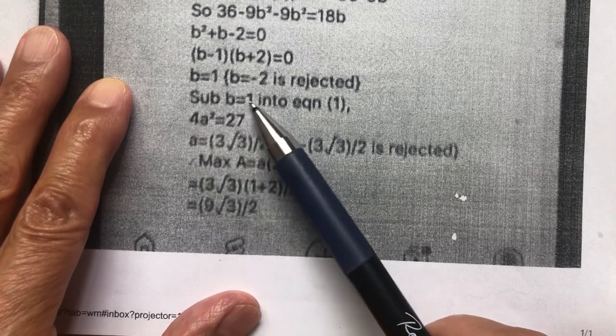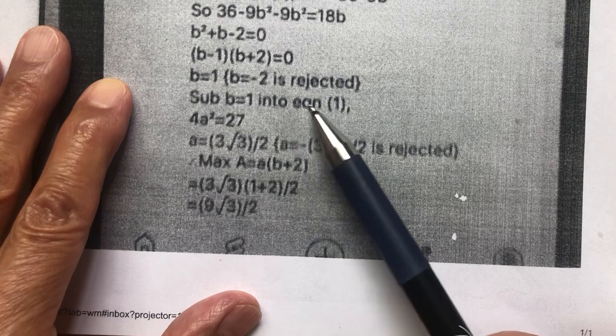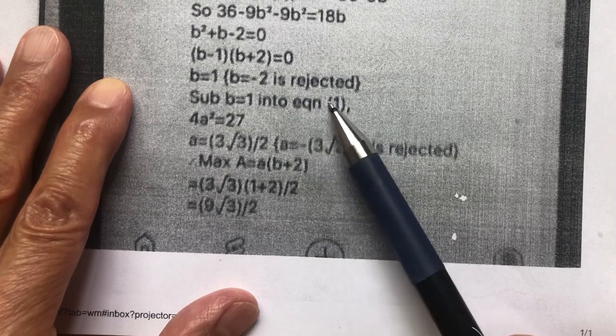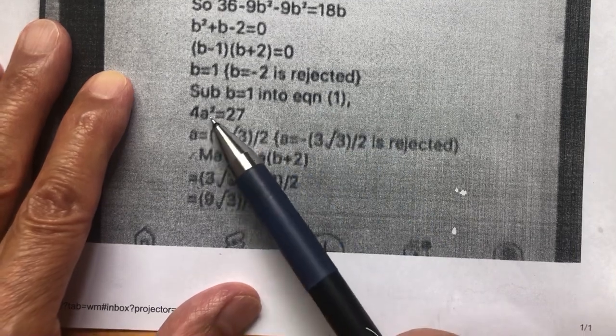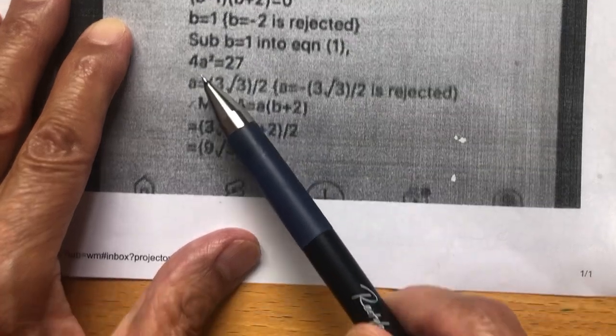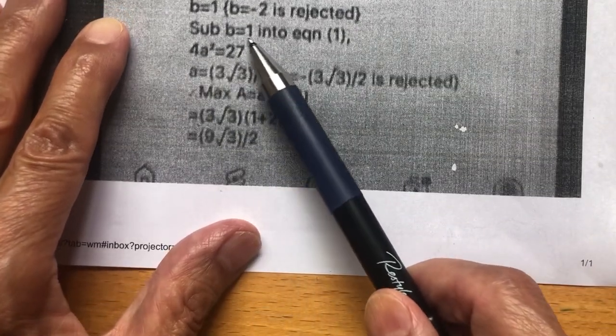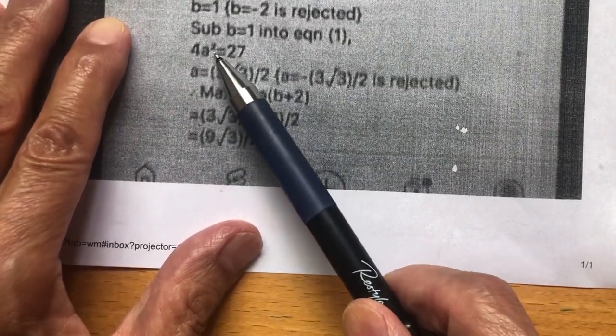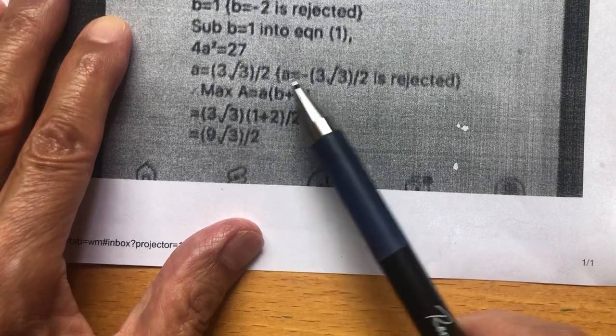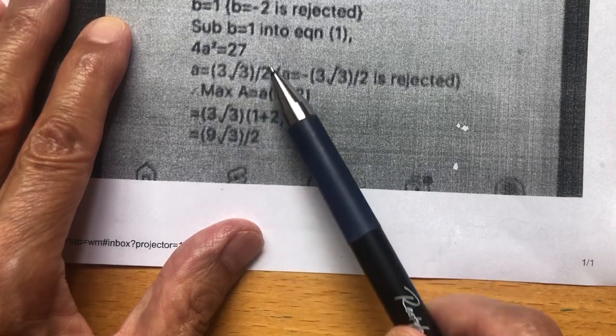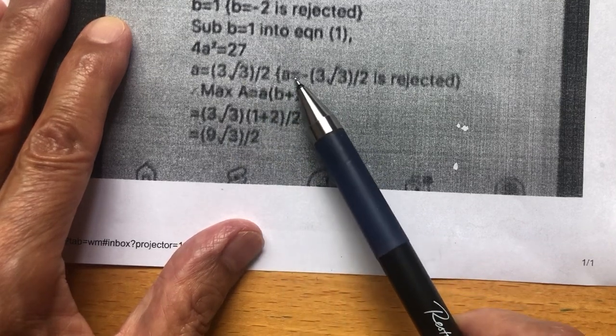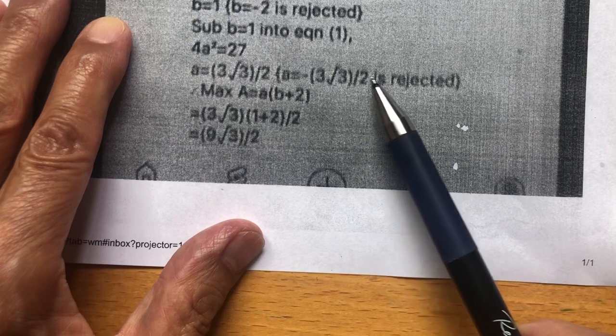Once I have b equals 1, I substitute into equation 1. Then I can get a. So I have 4a squared equals 27. Solve for a. I get the answer for a, which is this. Again, the negative answer for a is rejected.